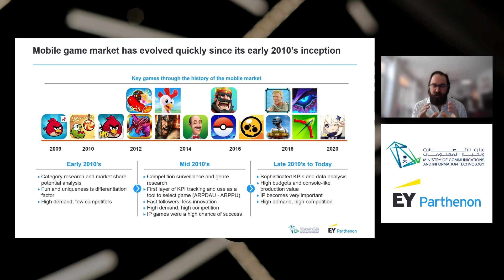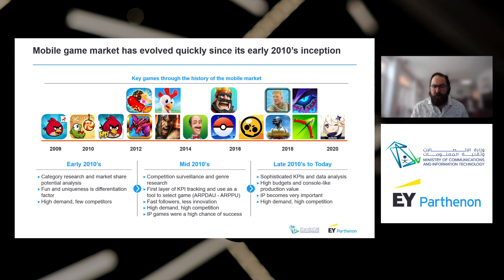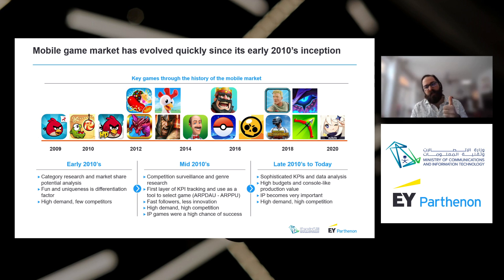At the beginning, fun and uniqueness were the differentiating factors. Just the fact that you could make a game that played great on a small screen was enough to become very successful. There was very high demand and very few competitors. Games like Cut the Rope and Angry Birds became very popular, and at that time every game was sold for 99 cents or $1.99. A break came around 2012, when Candy Crush and Puzzles & Dragons came out.